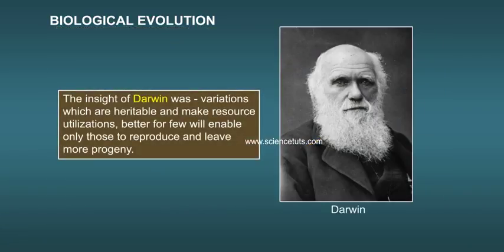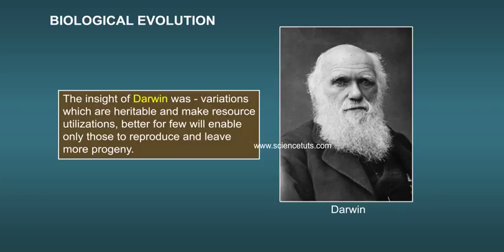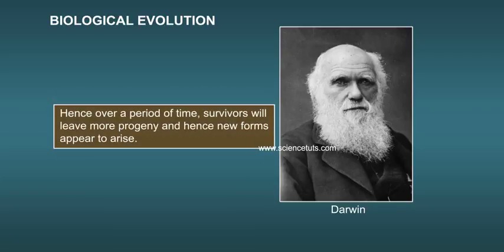The insight of Darwin was that variations which are heritable and make resource utilization better for a few will enable only those to reproduce and leave more progeny. Hence, over a period of time, survivors will leave more progeny and new forms appear to arise.